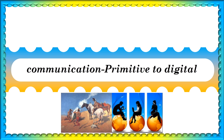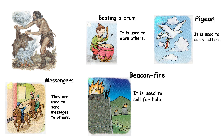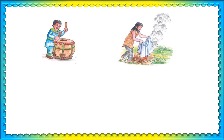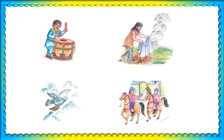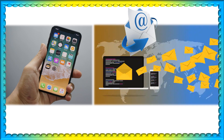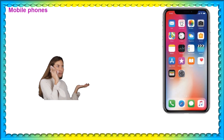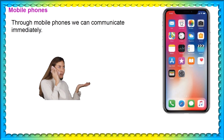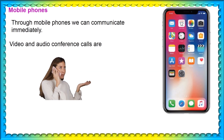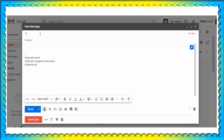Communication from primitive to digital. In ancient days, people communicated with those far away by drumming, giving signals through smoke, and sending letters with birds like pigeons. Human runners and horse riders carried messages from one village to another. But nowadays we communicate using phone and email. Through mobile phones we can communicate immediately, with direct talking, chatting, video and audio conference calls. We can also send images, documents, and videos to others.